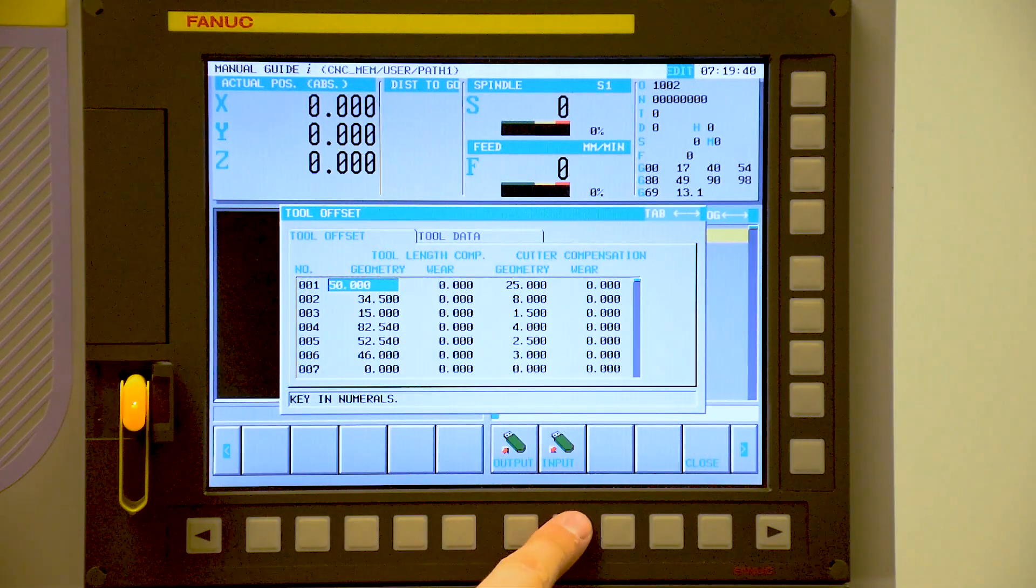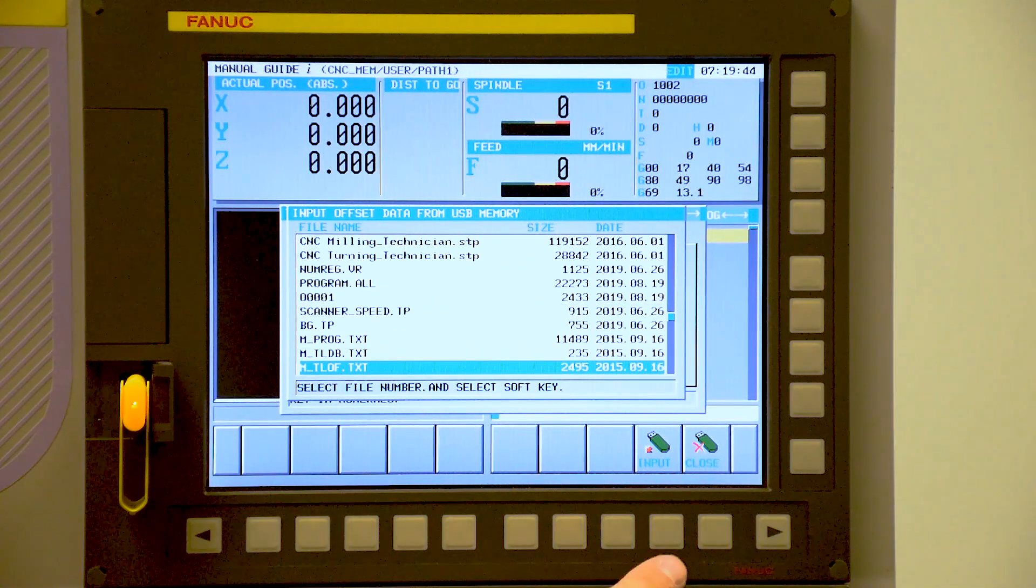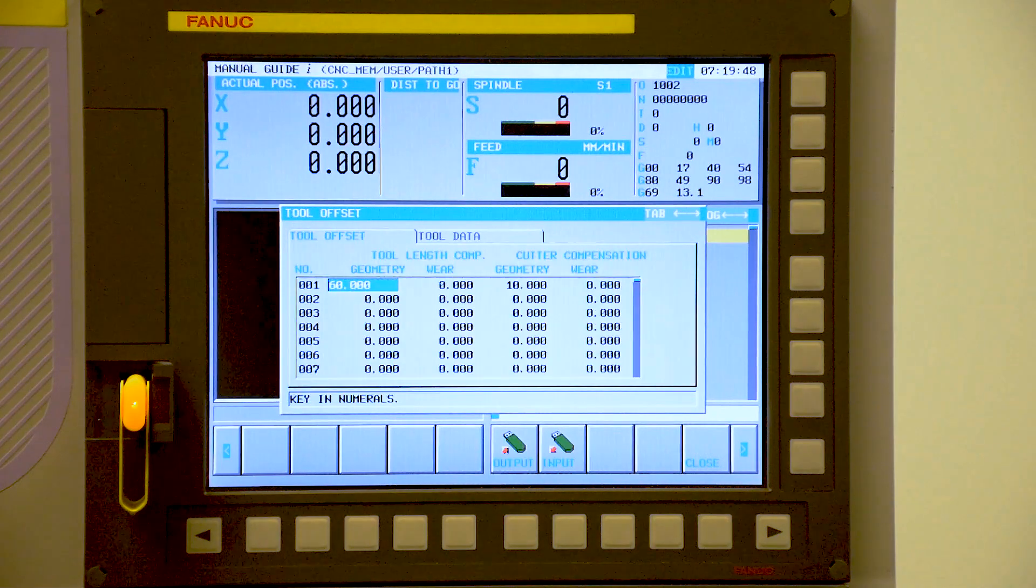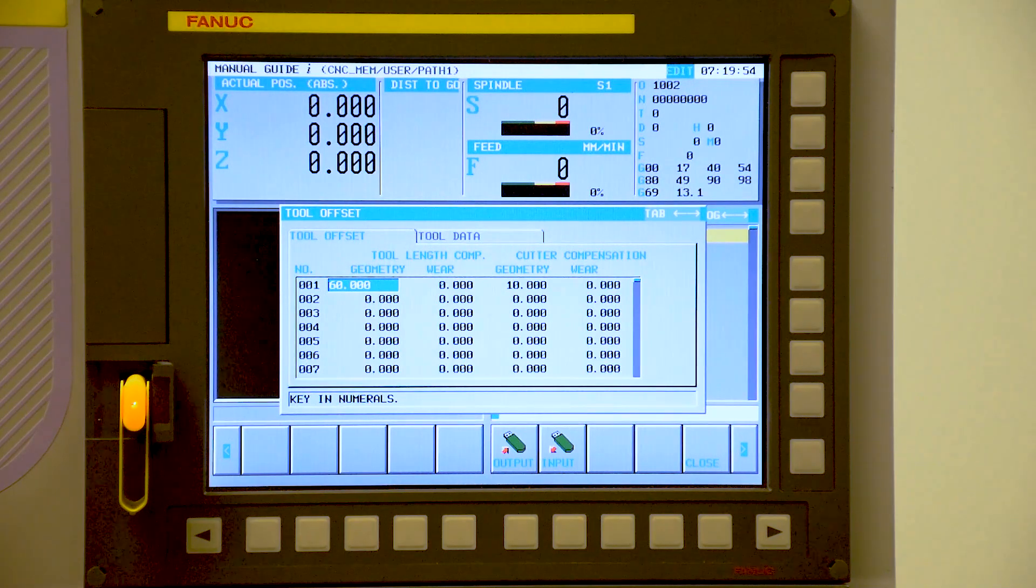We go back to our tool offset, press the right hand key again, press input and find the tool offset file and press input. This happens very quickly. So now we have tool information in there as well.